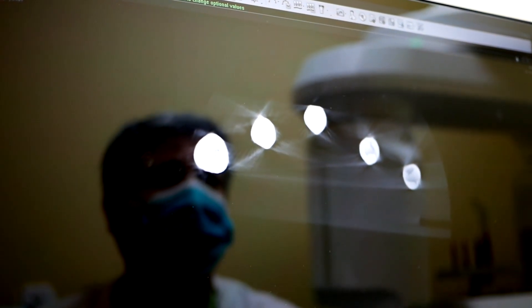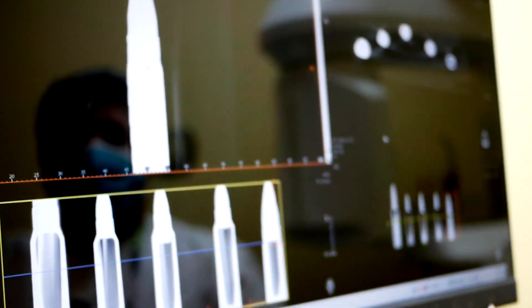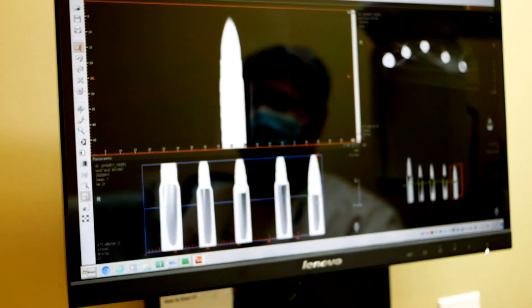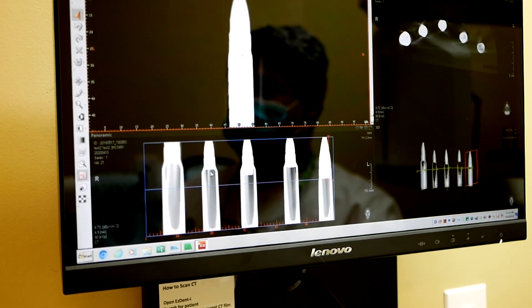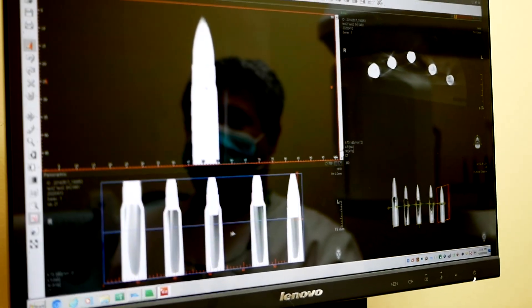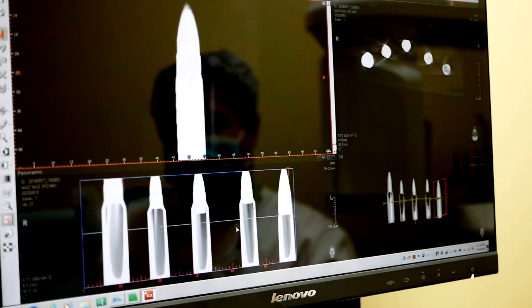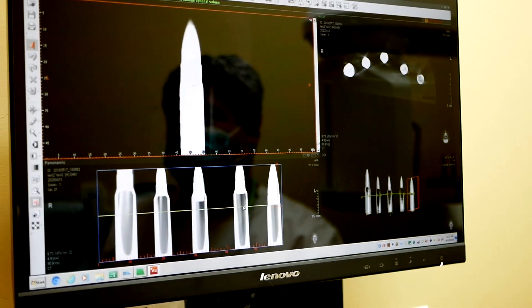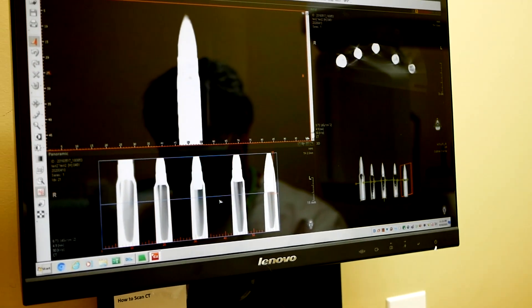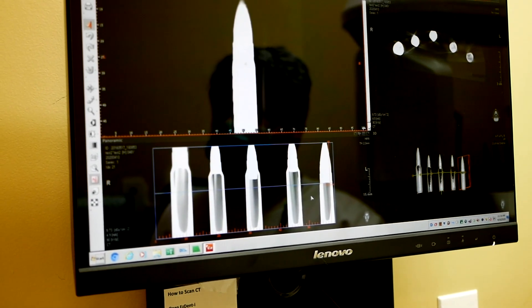But there you have it - a CT of a .308, a .300 Blackout, a 5.56 military, a 5.56 steel tip, and a .223. And as we all know, the .223 is under slightly less pressure than the 5.56, but the brass appears to be exactly the same as far as the thickness and the tolerances that we can see on this.